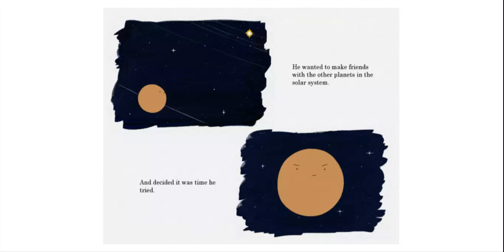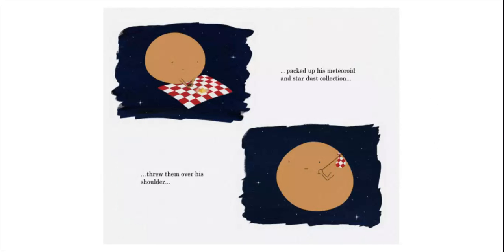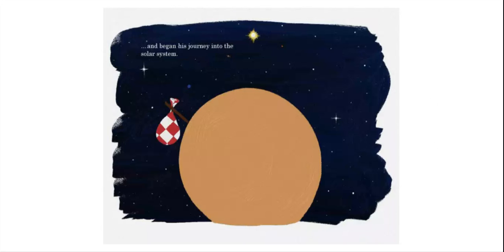He wanted to make friends with the other planets in the solar system and decided it was time he tried. So he broke out of his orbit, packed up his meteor and stardust collection, threw them over his shoulder, and began his journey into the solar system.